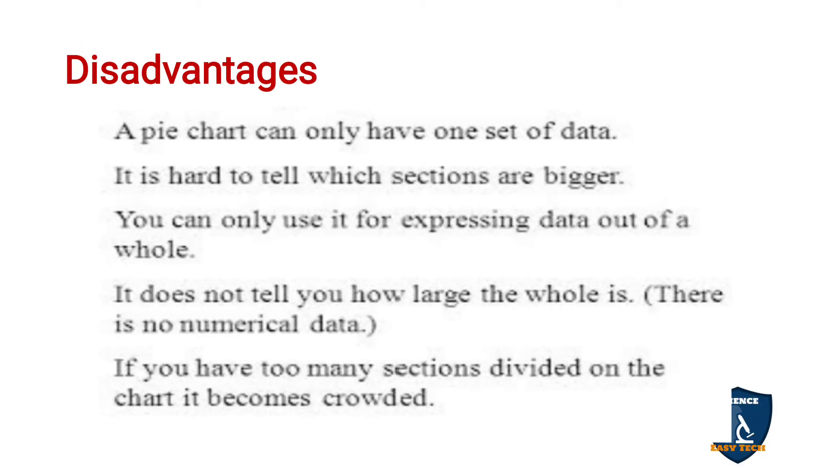Moving on to disadvantages. A pie chart can only have one set of data. It is hard to tell which sections are bigger. For example, sometimes one will be 50 degree angle, one will be 40 degree angle. In such cases it will be very difficult. The 40 will look like 50 or 45 will look like 50. You may not know which is bigger which is smaller if the data is at very close intervals.